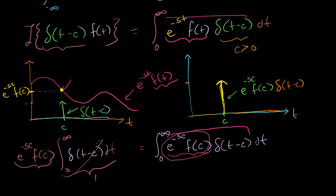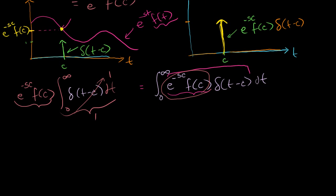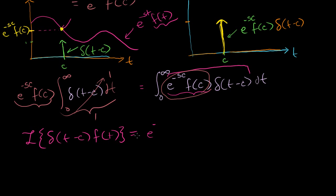So the Laplace transform of our shifted delta function times some other function is equal to e to the minus sc times f of c. Let me write that again. The Laplace transform of delta of t minus c times some function f of t equals e to the minus cs times f of c. We're essentially just evaluating these things at c.